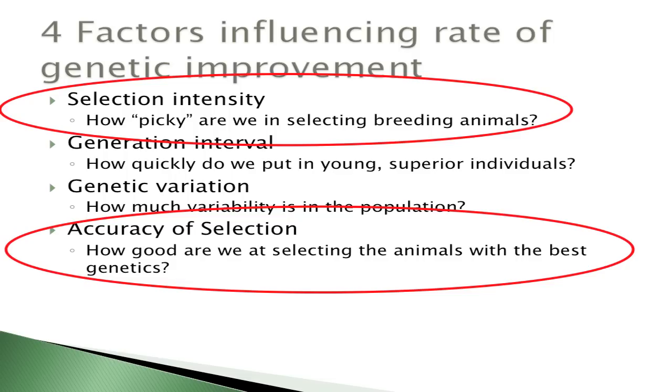The next factor is generation interval, which you have complete control over as breeders and managers. How quickly do you put in young, superior animals? Do you keep breeding older animals, or do you focus on replacing them with the best new genetics from both the male and female side? In general, the quicker you put in new animals, the faster your rate of progress. The more picky you are in selecting animals for the trait you want to improve, the faster you'll make genetic change.